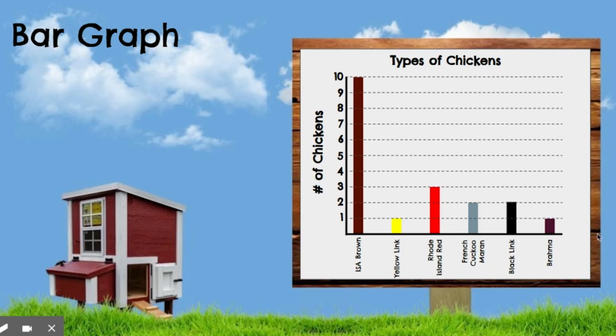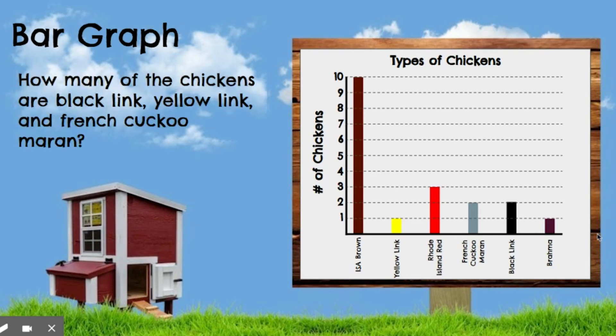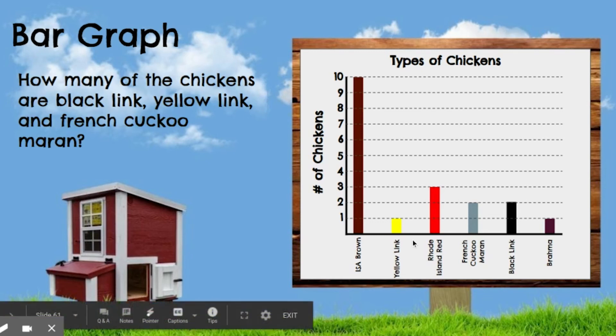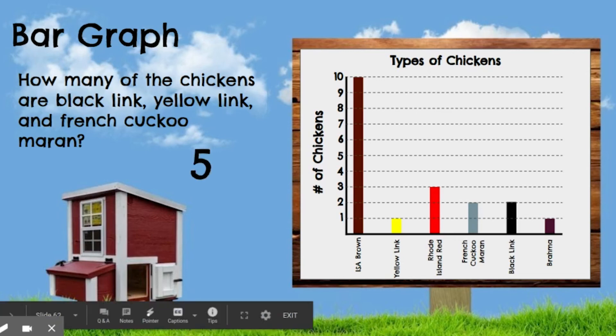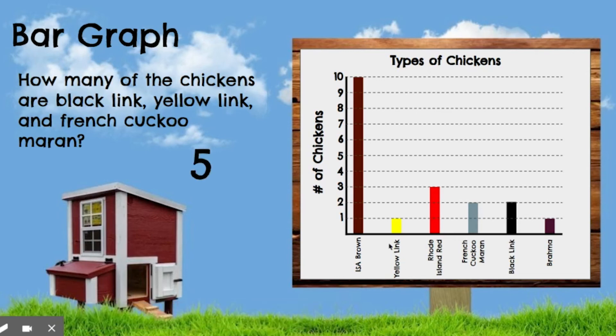Let's go ahead and ask some questions you might come across with a bar graph, very similar to the frequency table. How many of the chickens are black link, yellow link, and French cuckoo marins? Hopefully you were able to pause and see: yellow link was 1, French cuckoo marins is 2, and black link is 2. We add those up: 2 plus 2 is 4, plus 1 is 5. So there are 5 chickens.